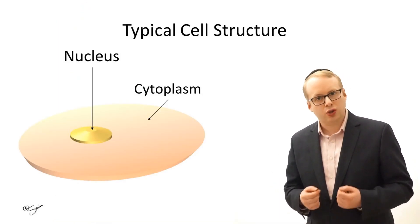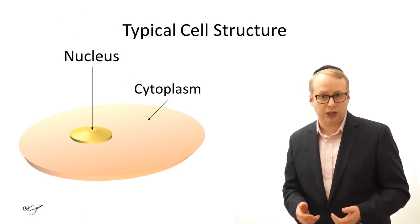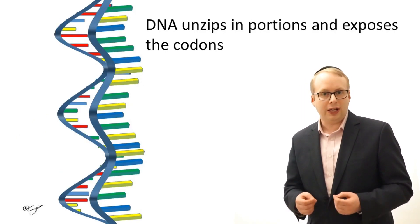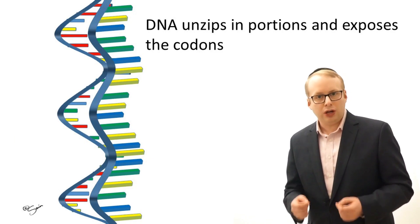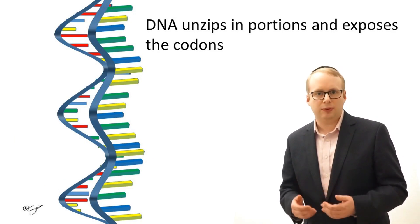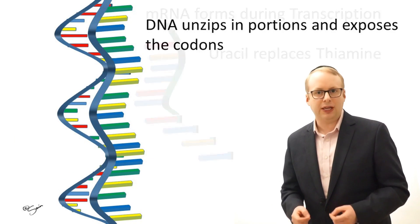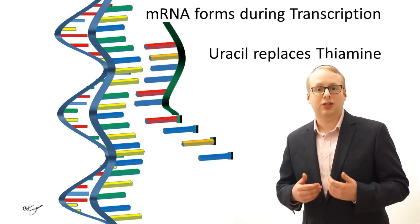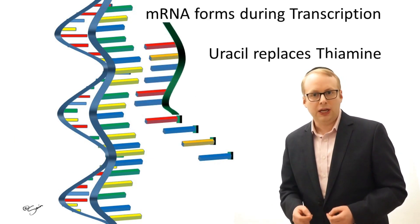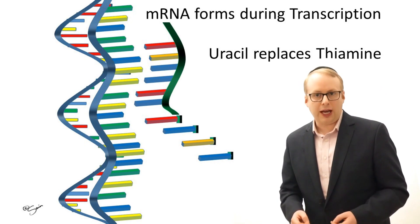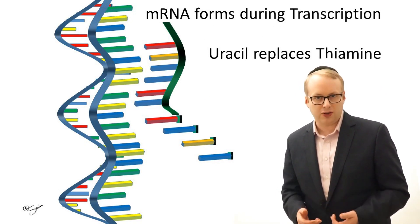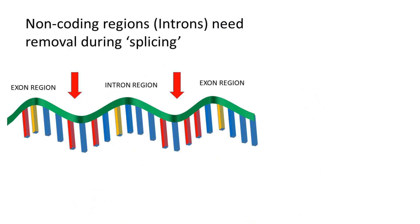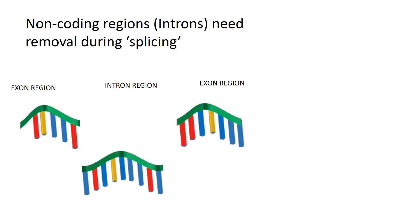The DNA is housed in the control centre of the cell called its nucleus. When a protein or enzyme is going to be made, the relevant portion of the DNA unzips from its double helix structure and a copy is made in a process called transcription. This copy is made of RNA and is then rapidly edited in a process called splicing, which is required because large portions of the genetic code are not directly used to make the desired product.